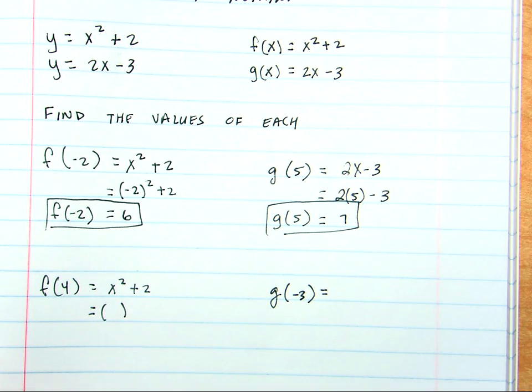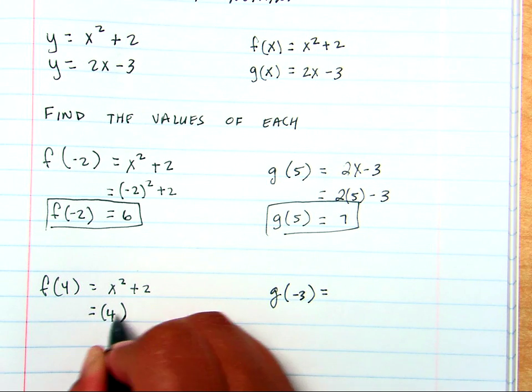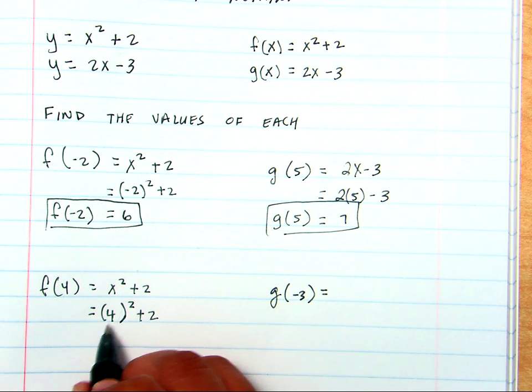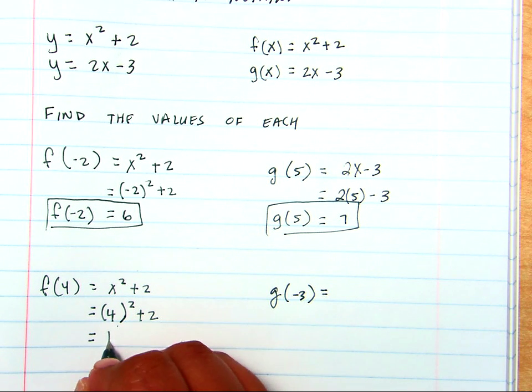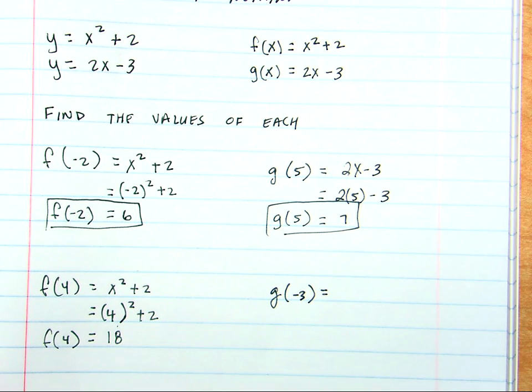anytime we're placing in a number for a letter, we use parentheses. So, we would read this now, 4 squared plus 2. Well, 4 squared is 16. 16 plus 2 is 18. So, f of 4 is 18.